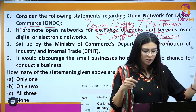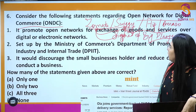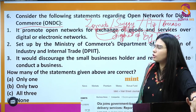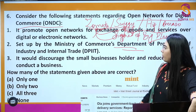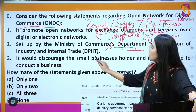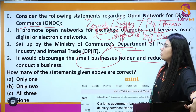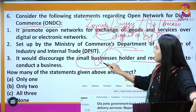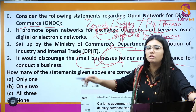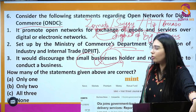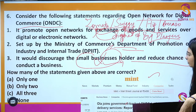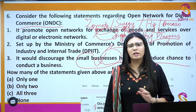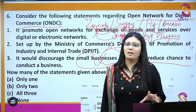Statement 1: ONDC promotes the exchange of goods and services over a digital electronic network — this is correct. It was set up by the Commerce Ministry under DPIIT — correct. Statement 3: It would discourage small business holders and reduce chances to conduct business — this is wrong, because ONDC is based on the concept of promoting small businesses and local retailers. News: Ola has joined the government-backed ONDC for food delivery services.